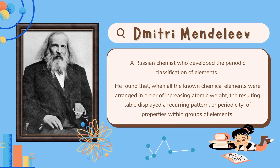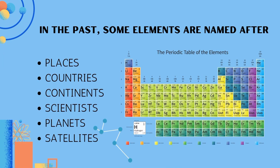Dimitri Mendeleev is a Russian chemist who developed the periodic classification of elements. Mendeleev found that when all known chemical elements were arranged in order of increasing atomic weight, the resulting table displayed a recurring pattern or periodicity of properties within a group of elements. In the past, some elements are named after places, countries, continents, scientists, planets, and even satellites.